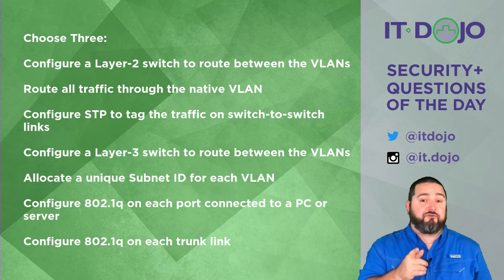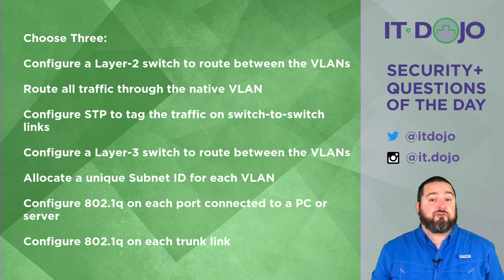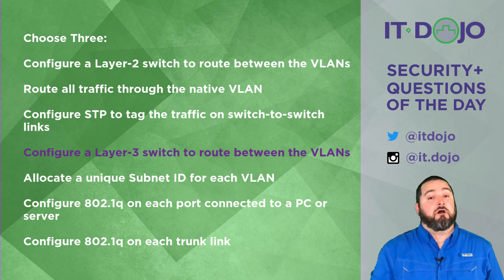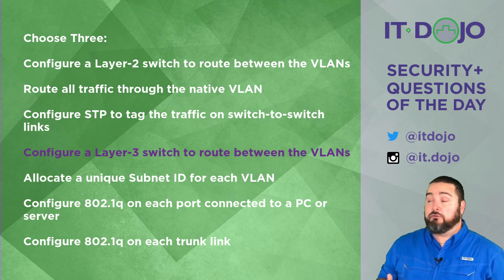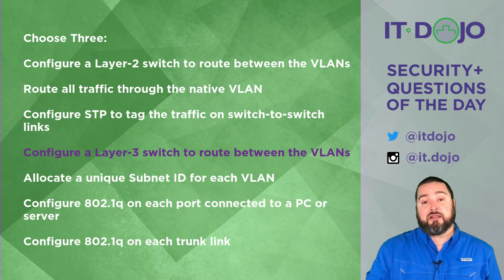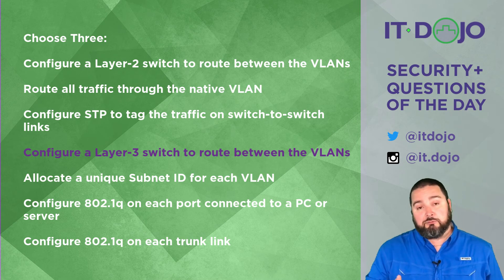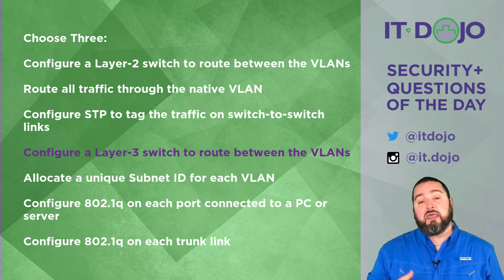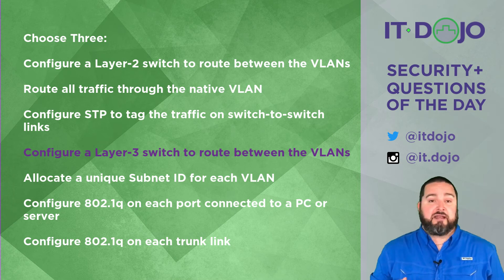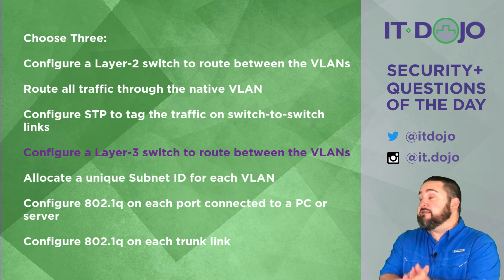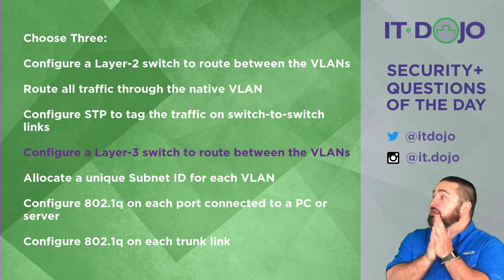How about configuring a Layer 3 switch to route traffic between the VLANs? Yes — that solves the inter-VLAN routing objective from the question. A Layer 3 switch has the capacity to actually route traffic between different VLANs, so that accomplishes that objective for you.